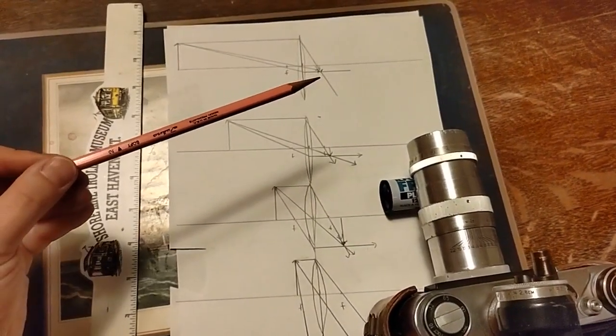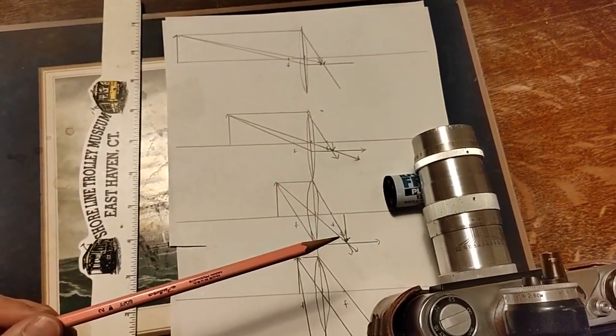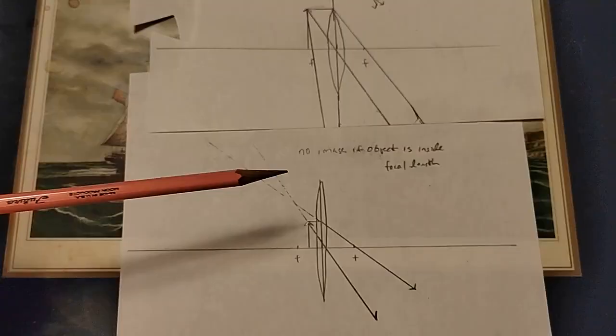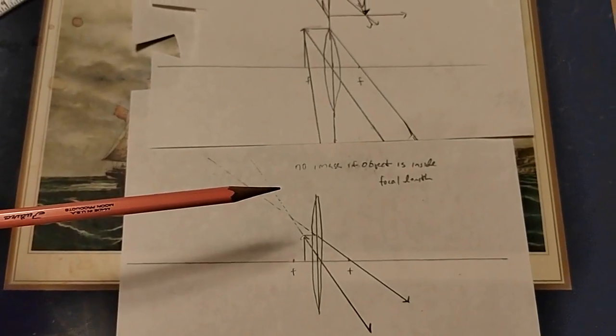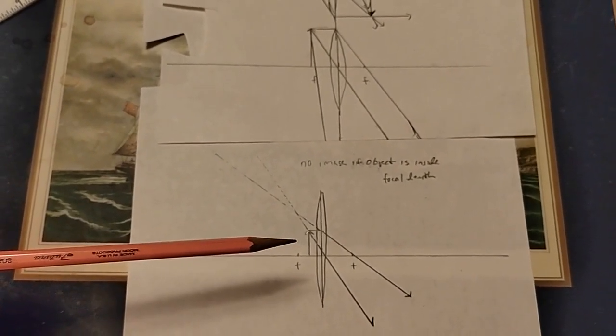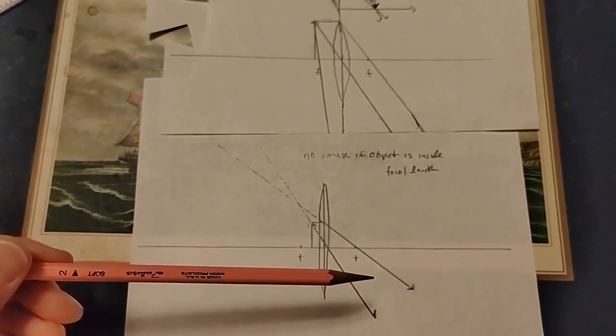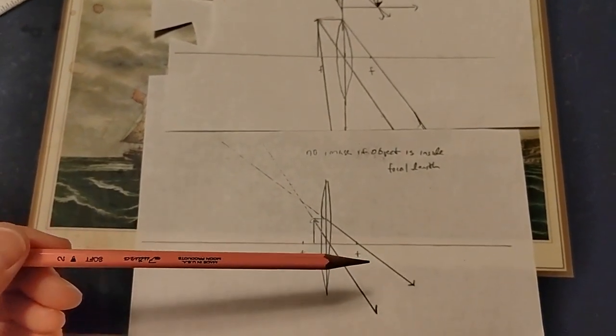At infinity, the image is at the focal point. Much closer, the image is behind the focal point. We can also explain why when we move the object inside the focal length, we didn't see any image. On this side of the lens where we would expect to find the image, the rays don't converge anymore.